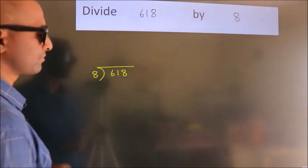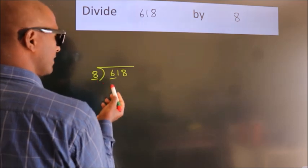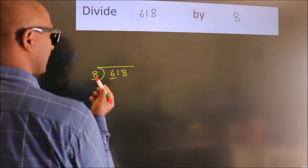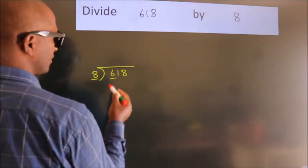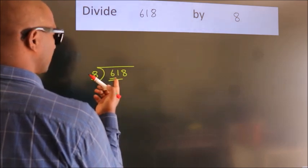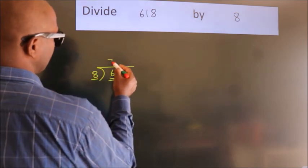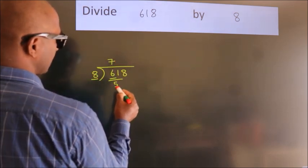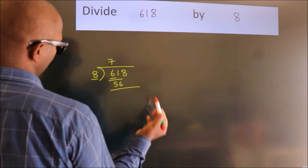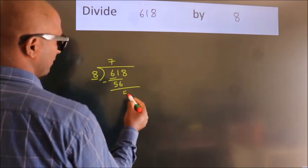Next. Here we have 6. Here 8. 6 is smaller than 8, so we should take two numbers: 61. A number close to 61 in the 8 table is 8 times 7 is 56. Now we should subtract. We get 5.